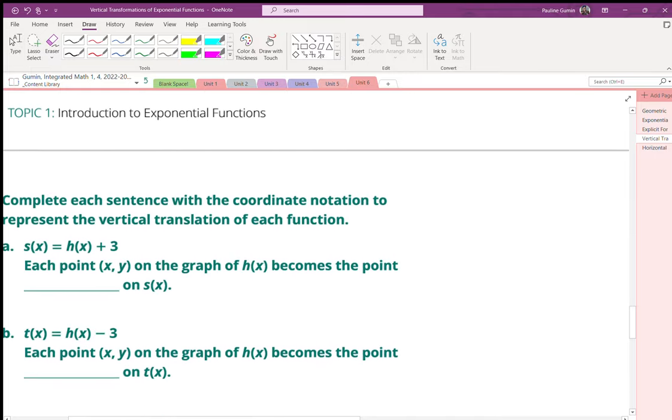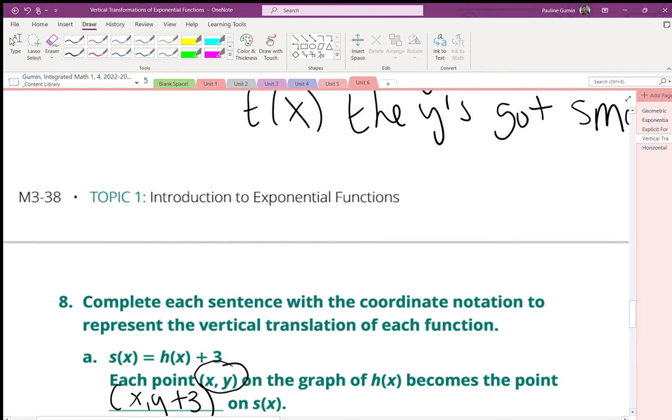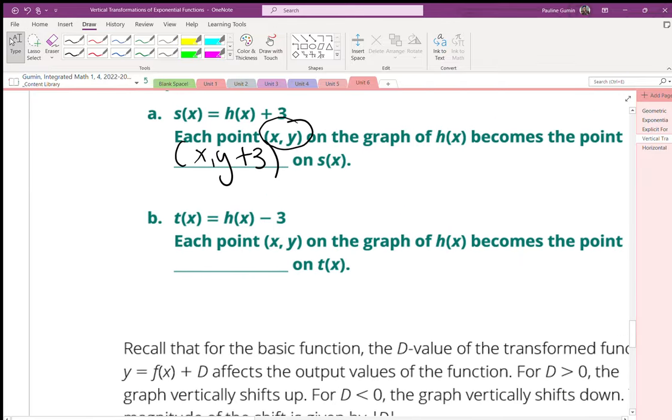For number 8, we're just rewriting it in another way. For s of x, we had a movement up, which changes our original (x, y) to (x, y plus 3). Because that's what we said in number 7, they got larger by 3. And for t, our y's were subtracted by 3. They got smaller by 3.